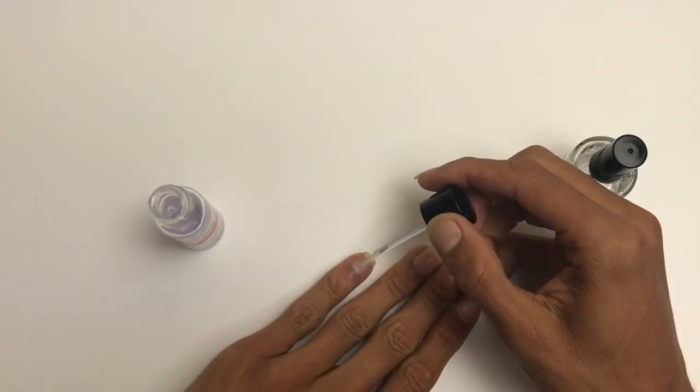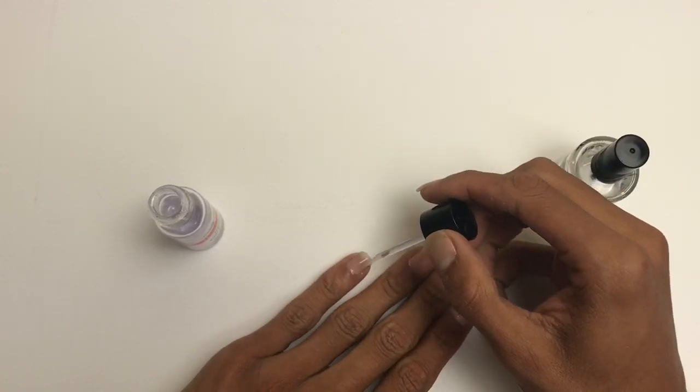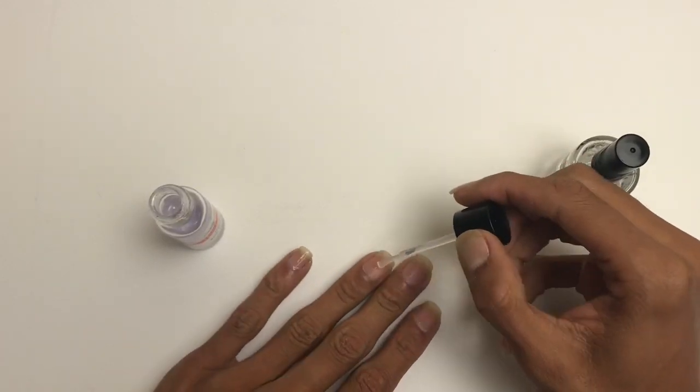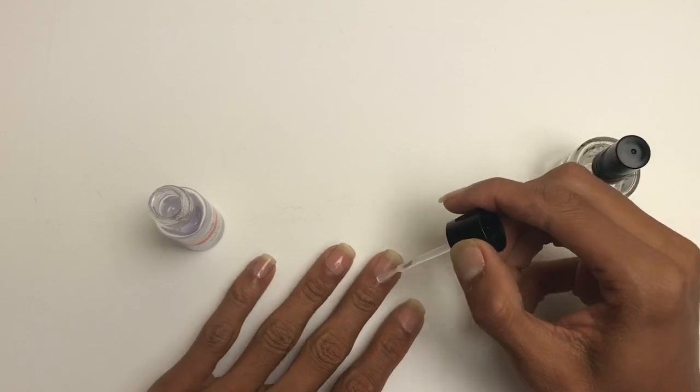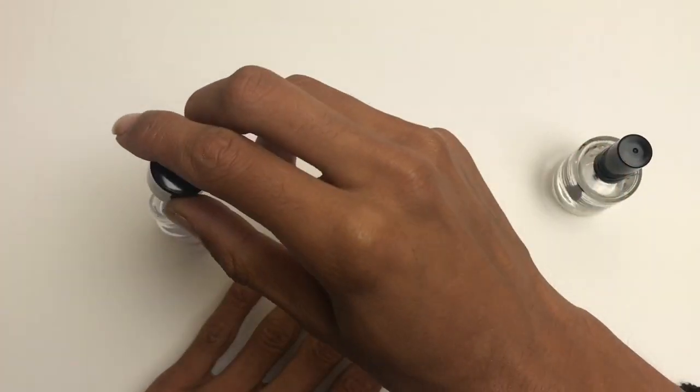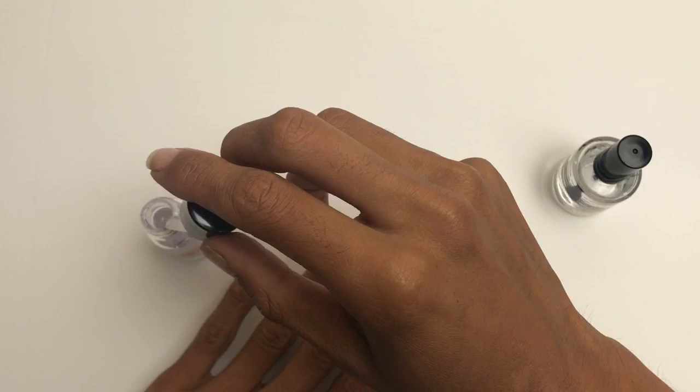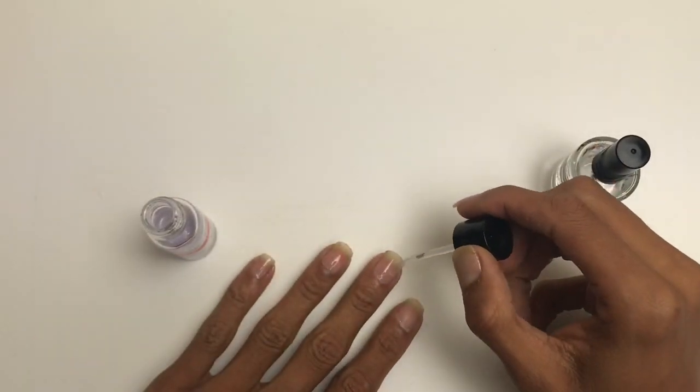I'm going to apply the Sally Hansen to my left hand with one coat. This is a very nice formula, however it did take five minutes to fully dry and it did not dry as shiny.